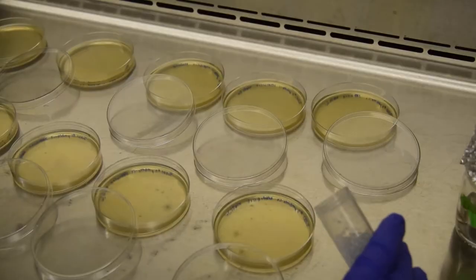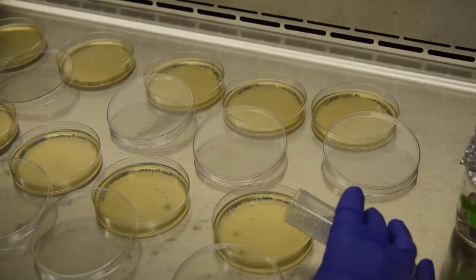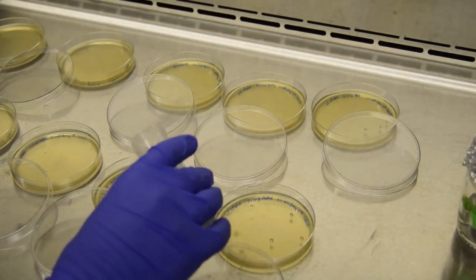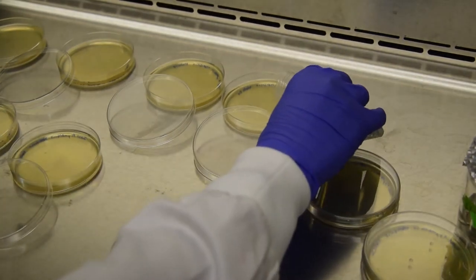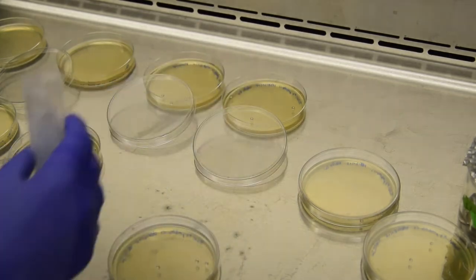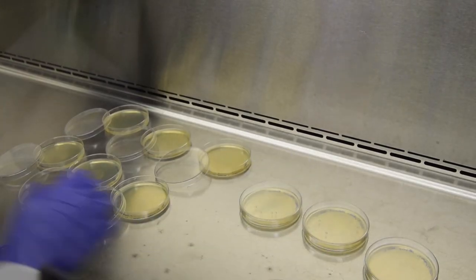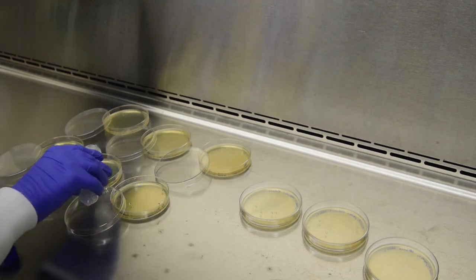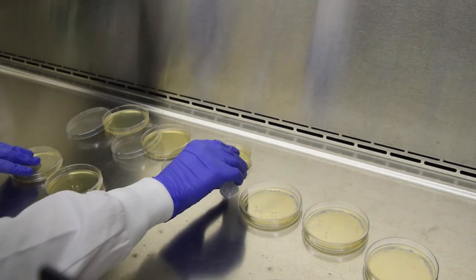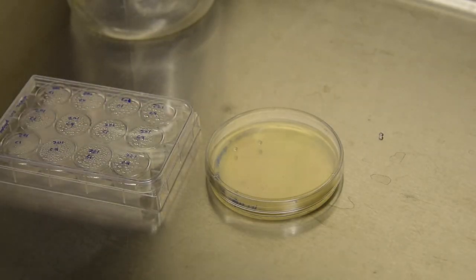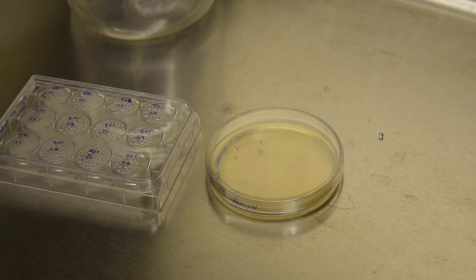Next, we will be plating the co-culture suspension onto selective medium. This is YPDA with chloramphenicol 34 mg per liter and G418 at a concentration of 100 mg per liter. Add at least 3 sterile glass beads to each of the plates. Take up to 200 microliters of the cell suspension and transfer to the selective medium.